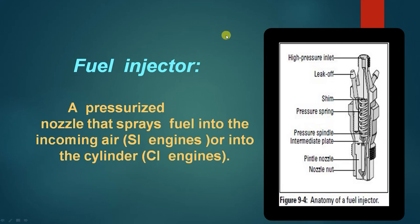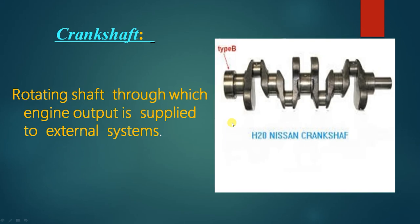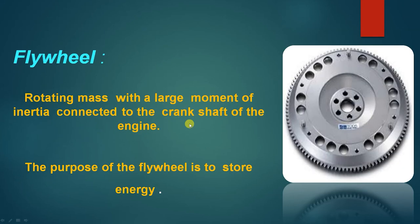The next part is the combustion chamber — the end of the cylinder between the head and the piston face where combustion occurs. Then the crankshaft, which is a rotating shaft through which the engine output is supplied to external systems. That is connected to the flywheel, which is a rotating mass with a large moment of inertia connected to the crankshaft of the engine.